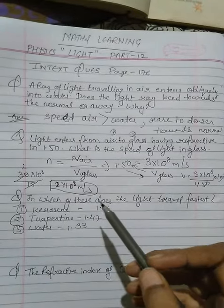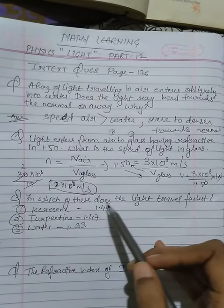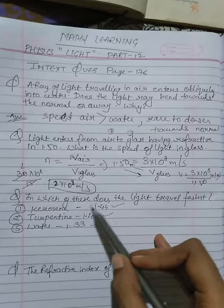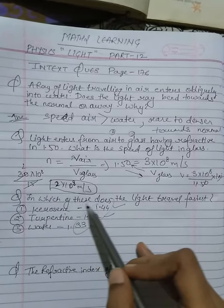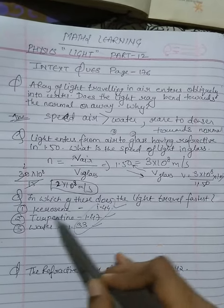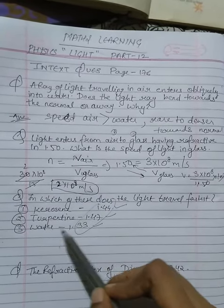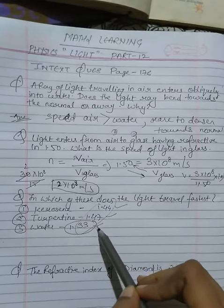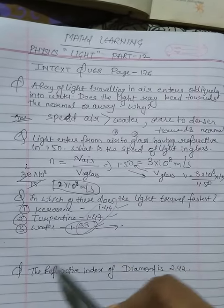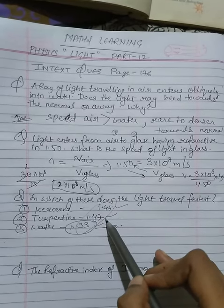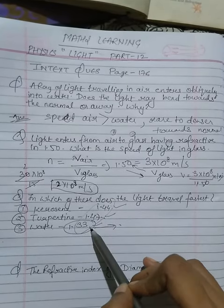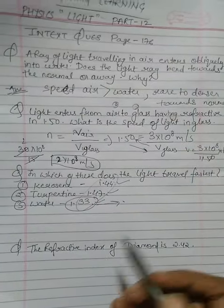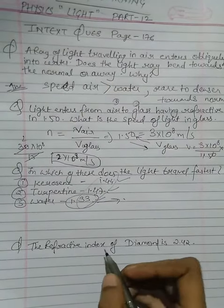The third question: in which of these does light travel the fastest? To find where light travels fastest, we look for the medium with the lowest refractive index. The lowest refractive index means the highest speed. So the answer is water, which has the lowest refractive index among the given options.